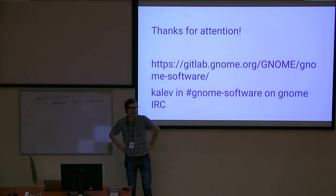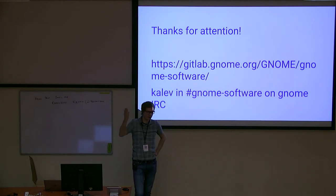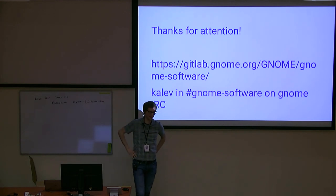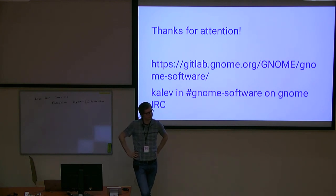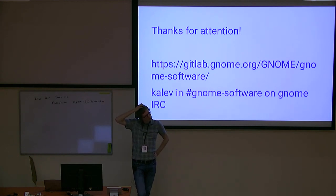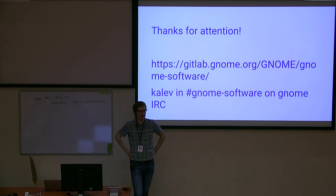One thing we didn't manage to do in time for Fedora 29 was to show textual progress for updates. What we want to do is show something like 'downloading 1 megabyte out of 10 gigabytes' — so not just a short progress bar, but actually useful information. The Flatpak CLI shows how much data is being downloaded, and we are going to show that in GNOME Software as well.